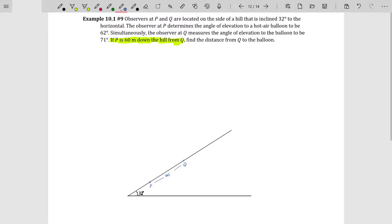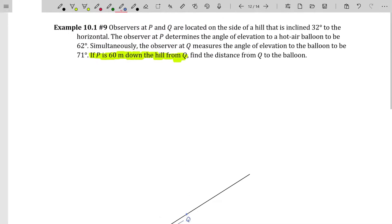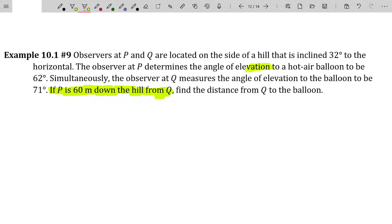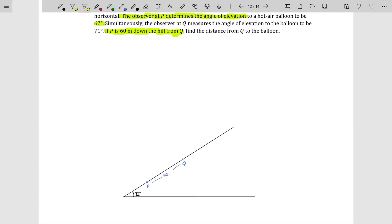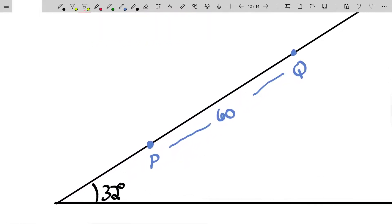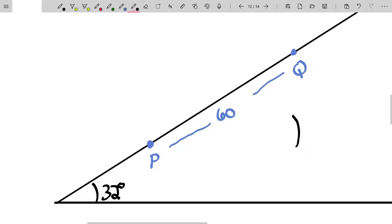I've read the problem. I know that person P is 60 meters down the hill from Q. So I'm going to go ahead and plot P and Q on this hill. So this distance is 60 from here to here. They're 60 meters away from each other. Now, the observer at P determines that the angle of elevation to the hot air balloon is 62 degrees. Angles of elevation are how we look.